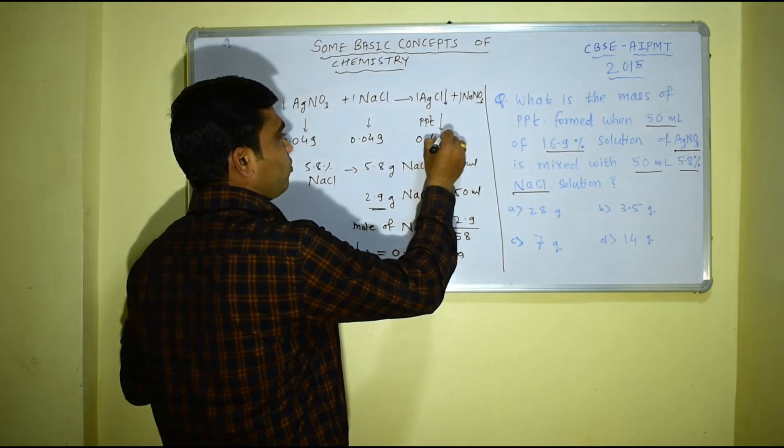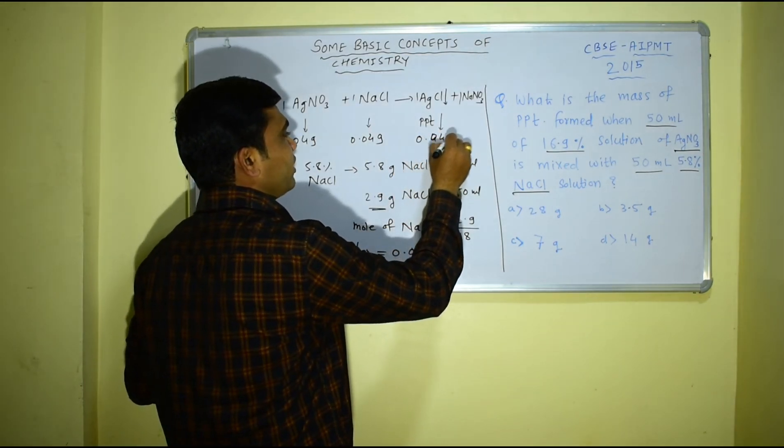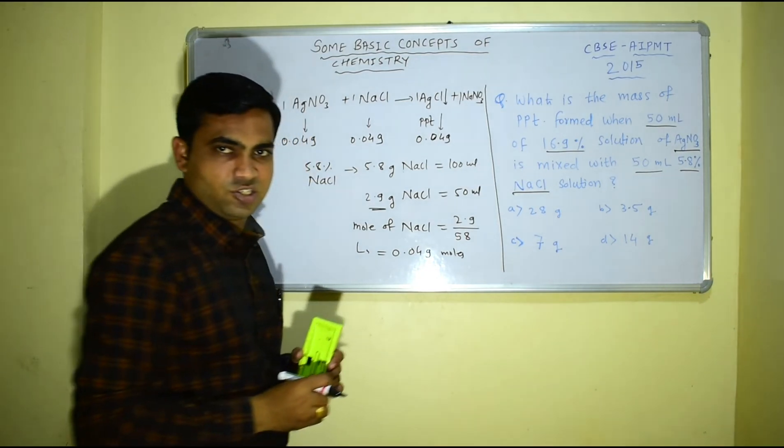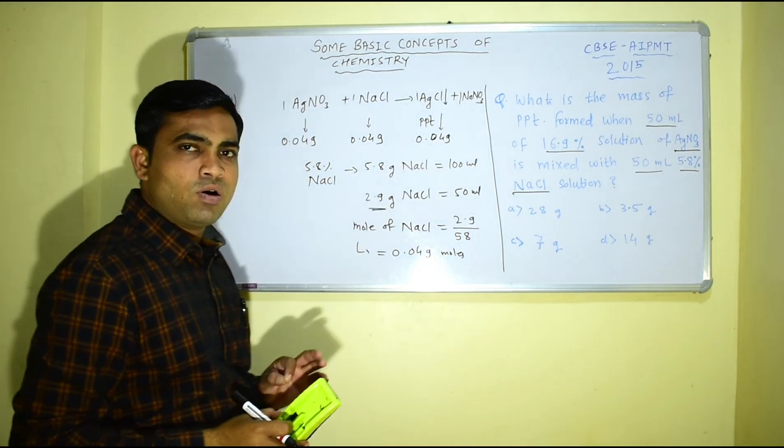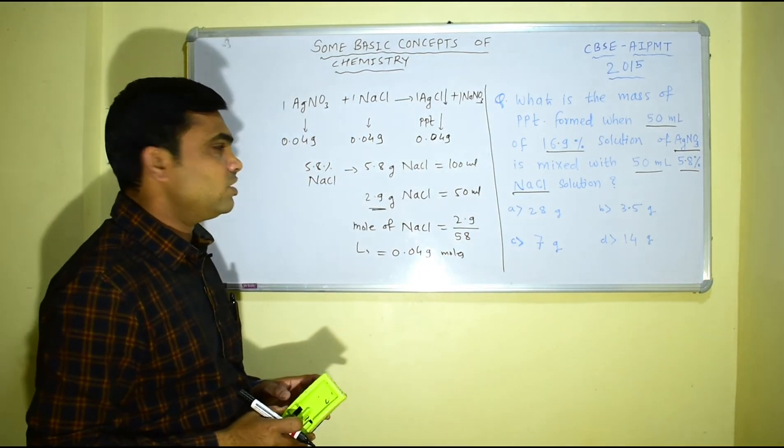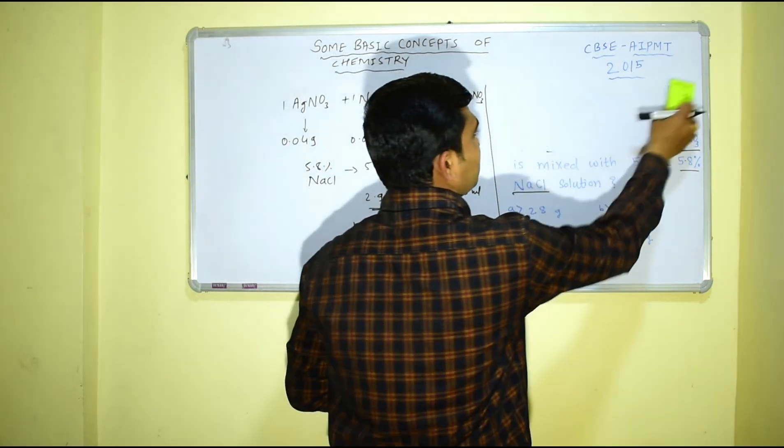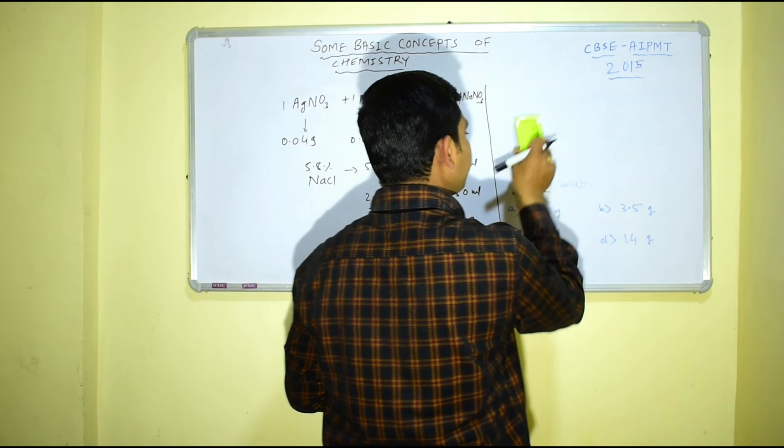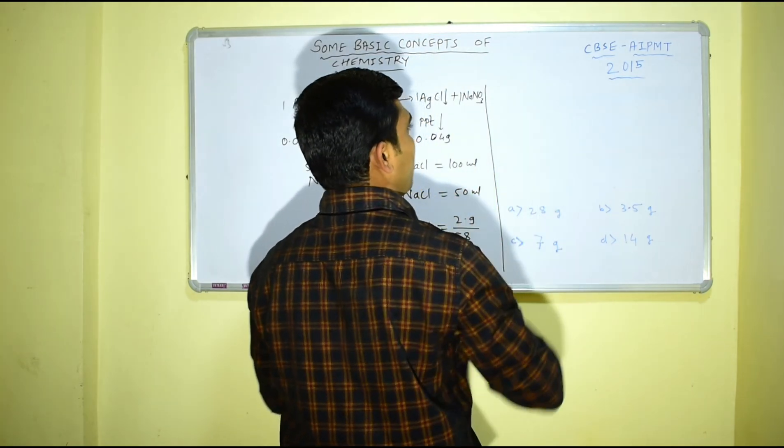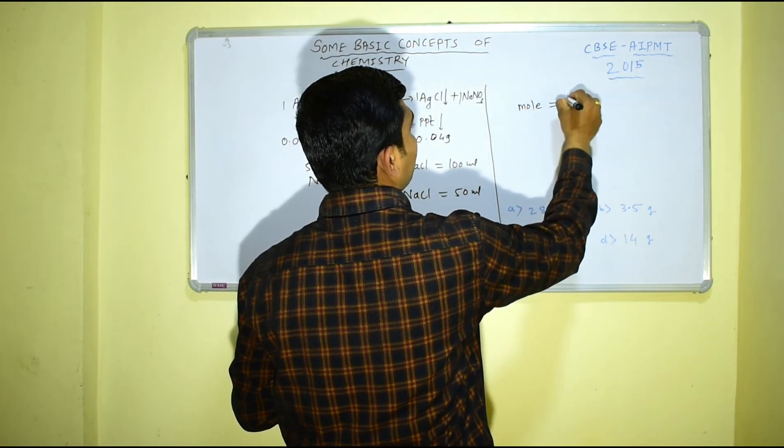So what we have got? We have got moles of AgCl which is formed. So from moles we can determine mass of AgCl easily. So we have this formula: mole is equal to mass upon molecular mass.